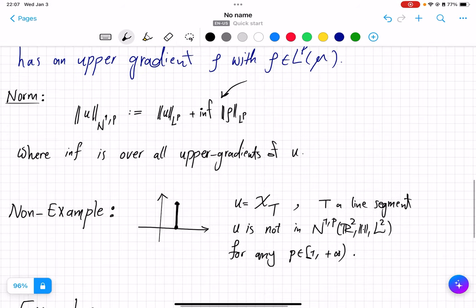After introducing this class of functions, we saw a non-example, where you have the function that is equal to 1 only on one line segment, and then 0 everywhere else. And despite being almost everywhere equal to 0, this function is not in the Newtonian space because it does not have an upper gradient, which we proved in two videos.